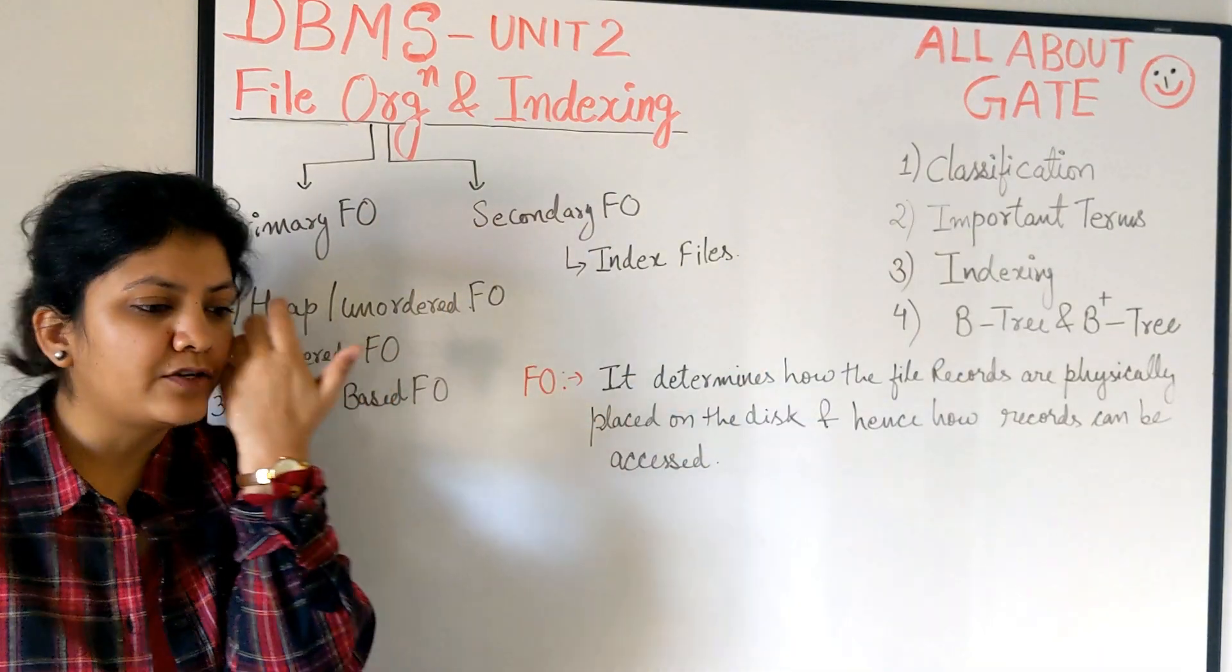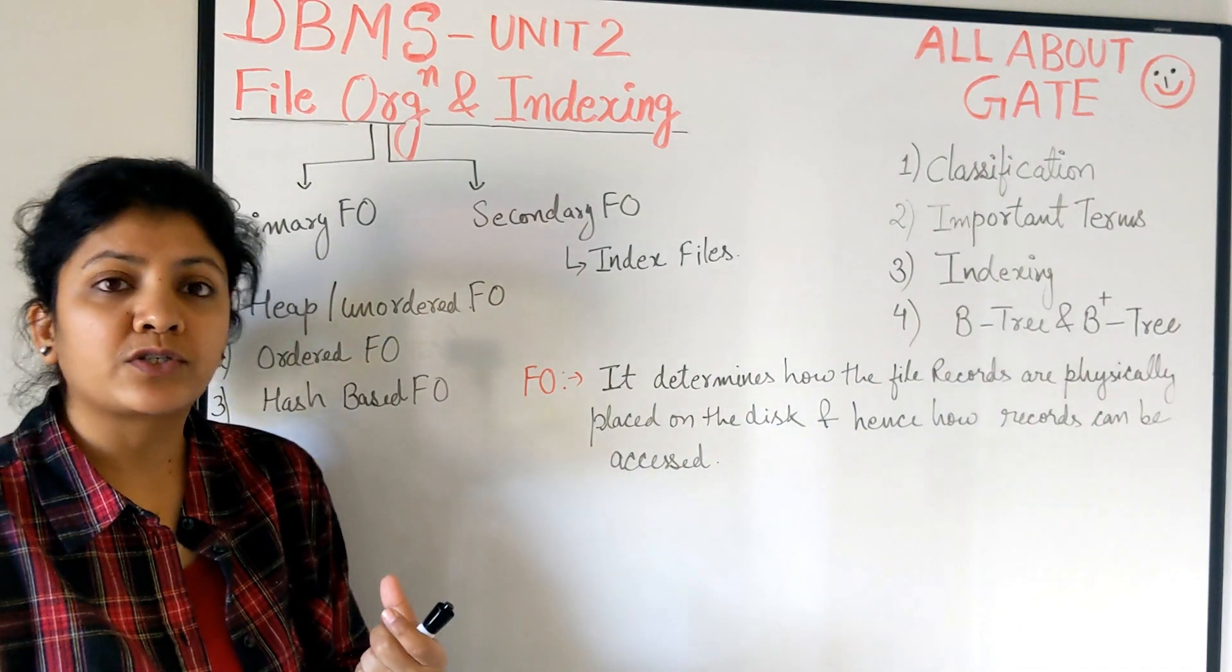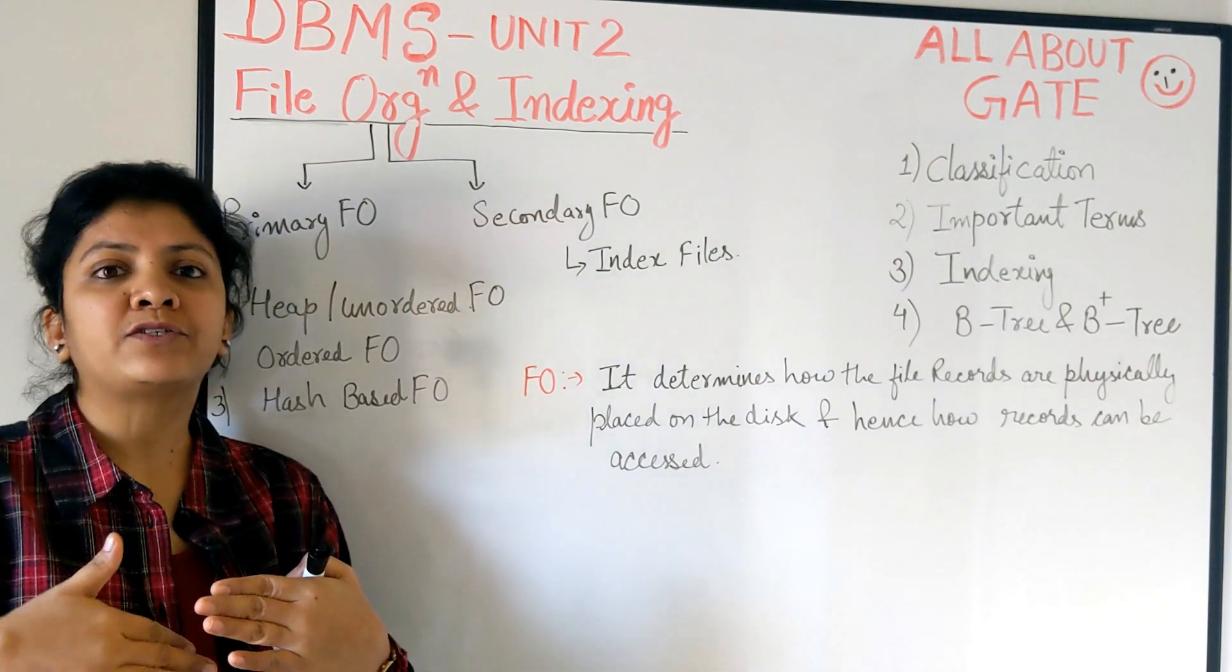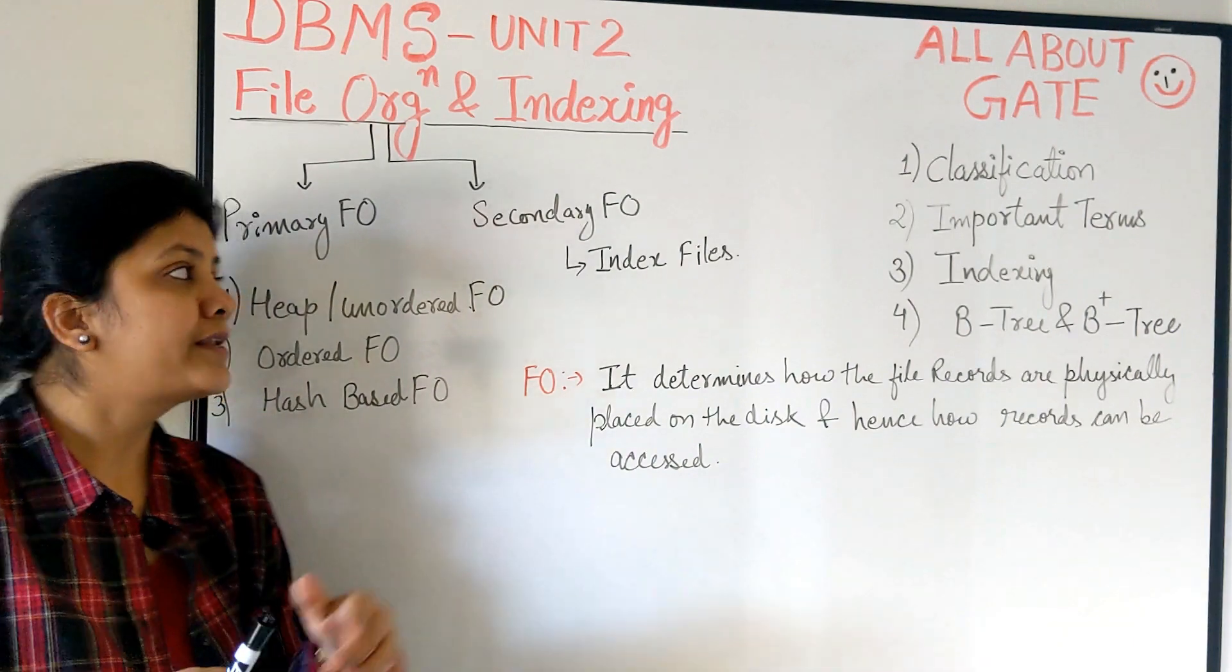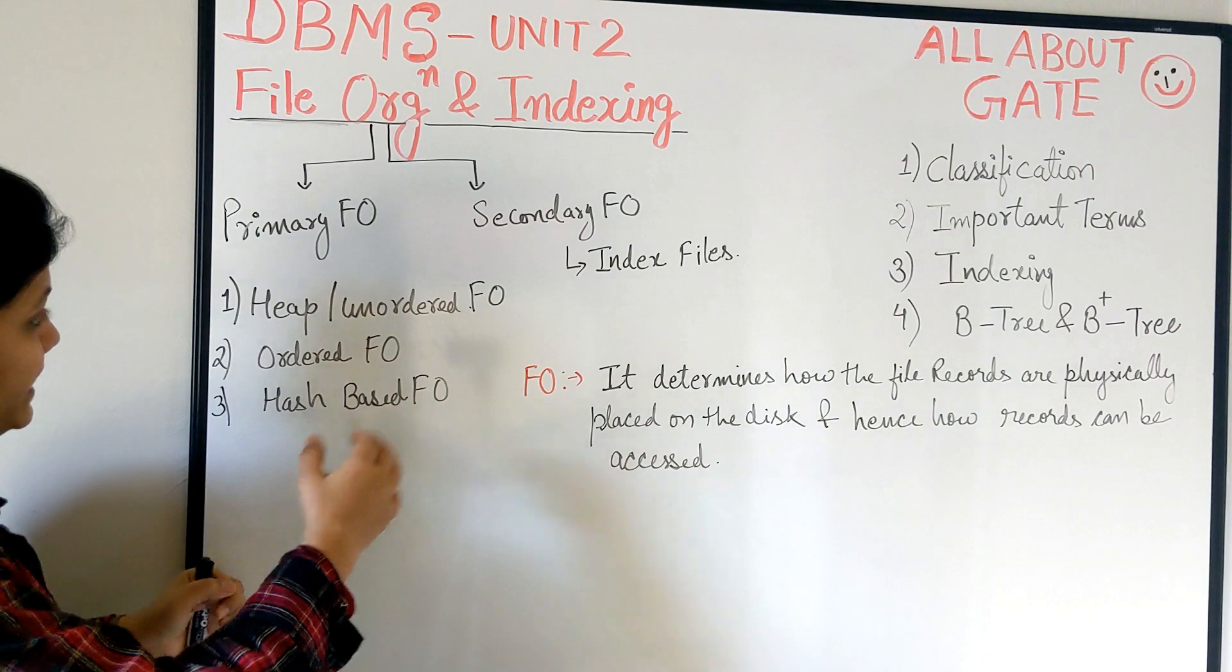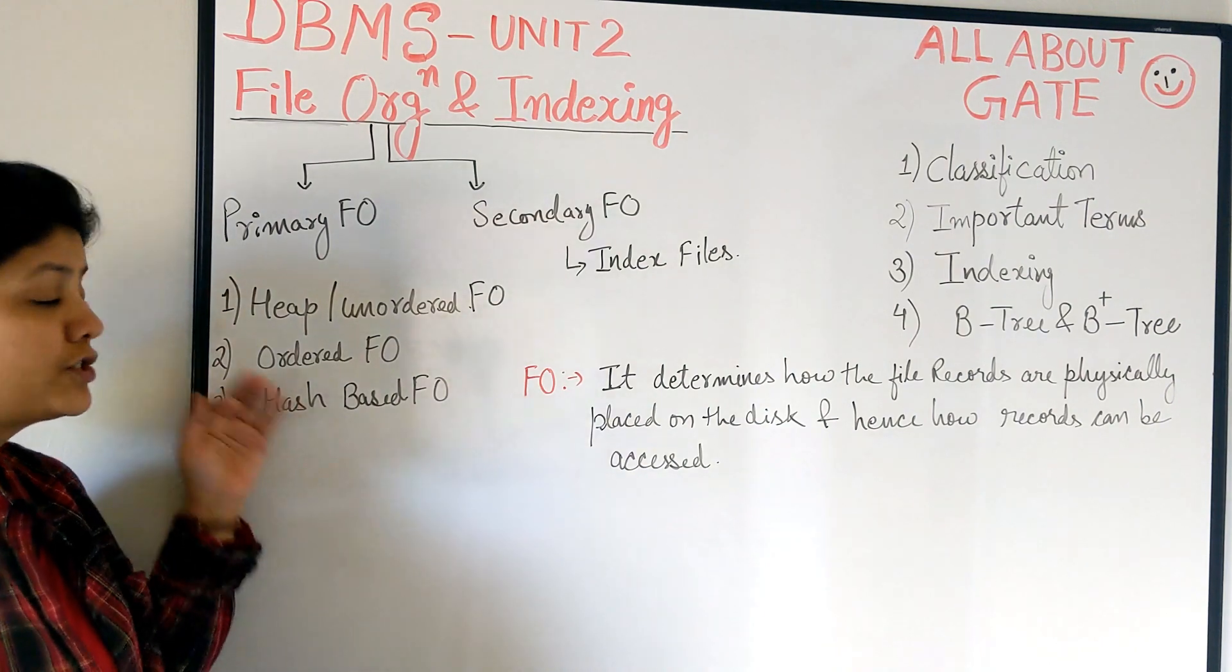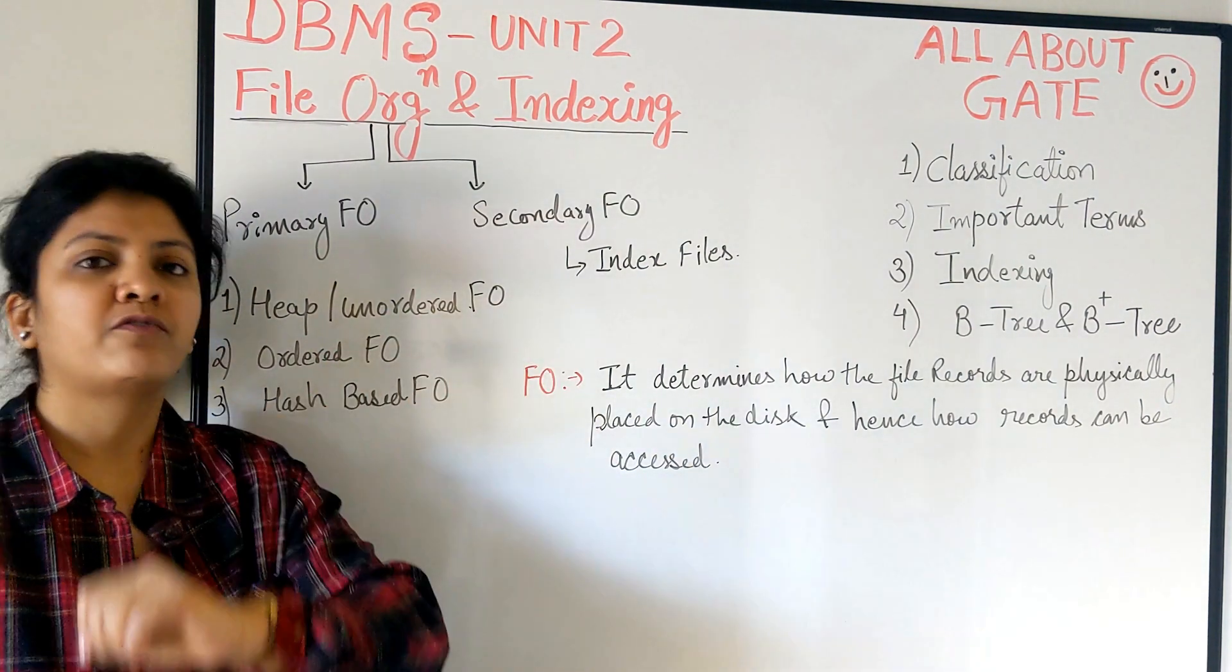Secondary file organization is the auxiliary data structures which help after a good primary organization to improve the number of access times. That's a secondary part. The first important thing is primary organization. There we can have three types in general: heap or unordered file organization, ordered file organization, and hash-based file organization.